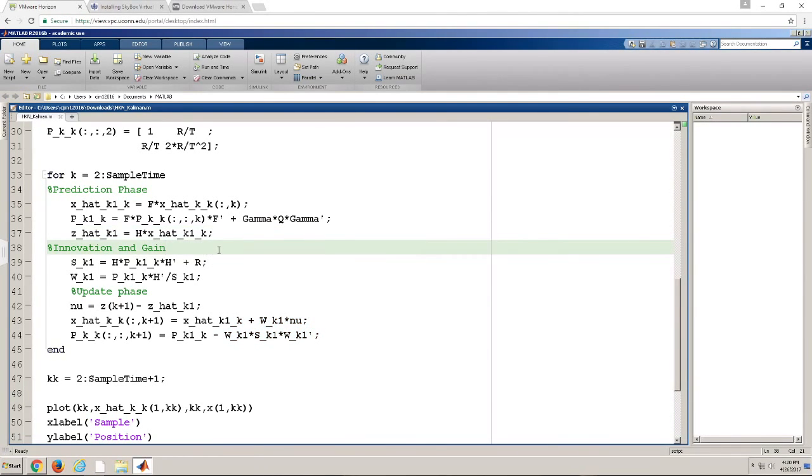So that was the prediction phase. We now need to do the innovation and gain. So S, which is the covariance of your estimate of Z hat K1, also called the innovation, is S of K plus 1. And that's given by this formula here. H times the covariance of the predicted estimate of X times H transpose plus the covariance of your measurement noise. We then calculate the gain for our estimate, which is W of K plus 1. Which has a formula, it takes P K plus 1 given K times H transpose, and then you take the inverse and multiply it by the inverse of your innovation, which in MATLAB can be done by just doing a backslash, making sure that everything is positive definite and everything has to be well conditioned.